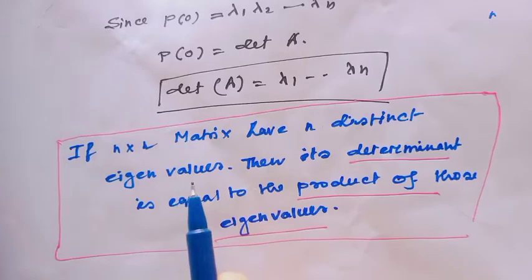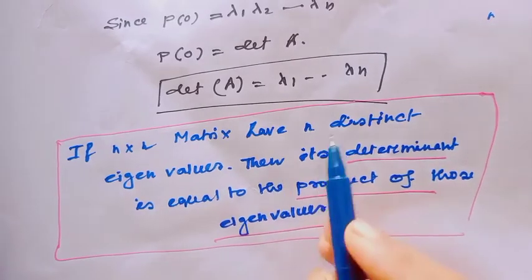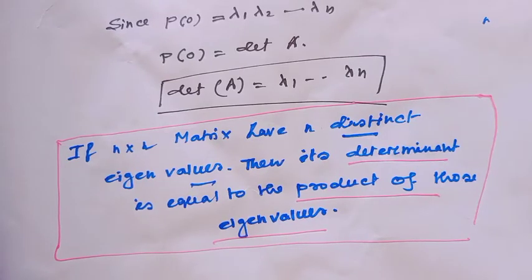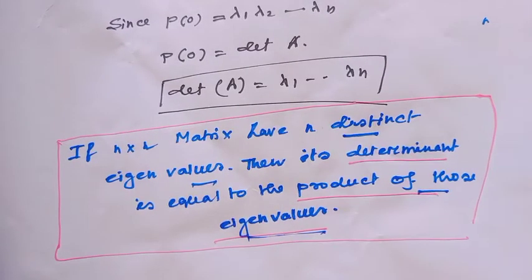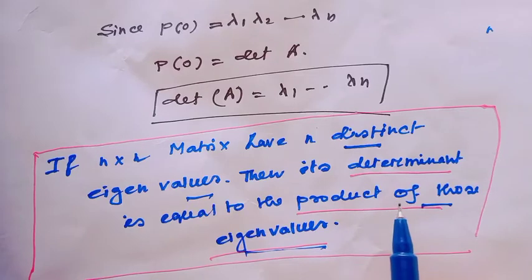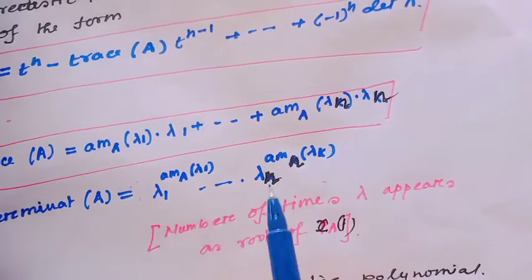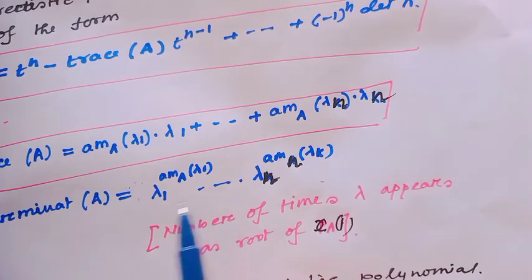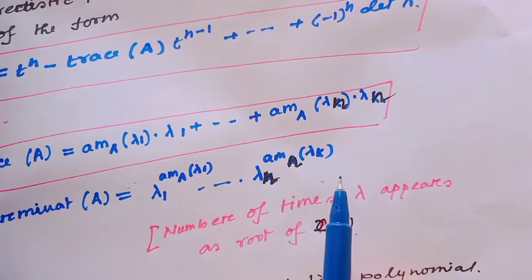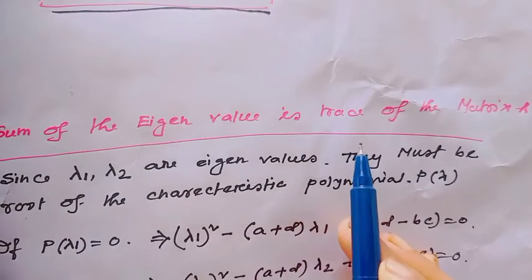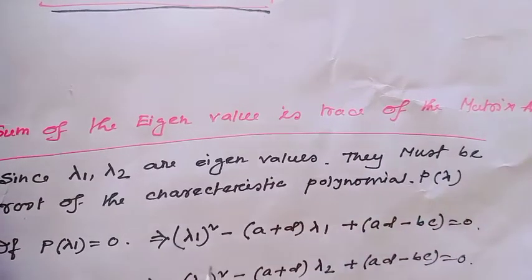That means if an n×n matrix has n distinct eigenvalues, its determinant equals the product of those eigenvalues. If eigenvalues have multiplicity greater than 1, the determinant equals λ₁^(m₁) × ⋯ × λₙ^(mₙ), where mᵢ is the algebraic multiplicity of λᵢ. Now I will show that the sum of eigenvalues equals the trace of matrix A.